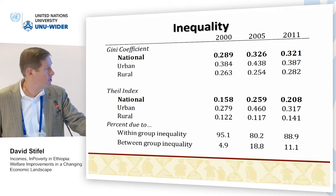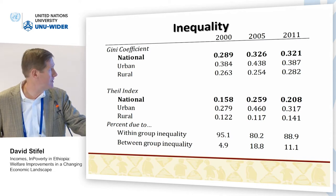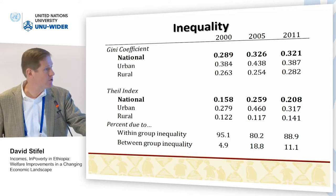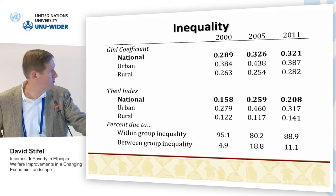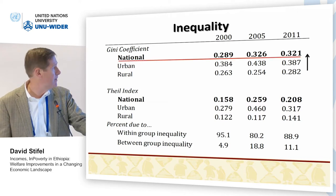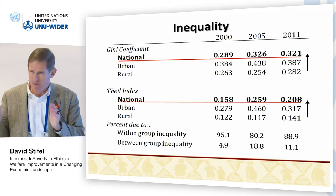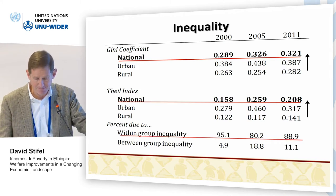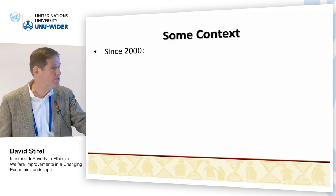Quickly on inequality: while we've been focusing on poverty, inequality rose — not monotonically, but over the course of the decade — whether we use the Gini coefficient or the Theil index, for both urban and rural areas. This is not surprising given that the poorest of the poor are not much better off.